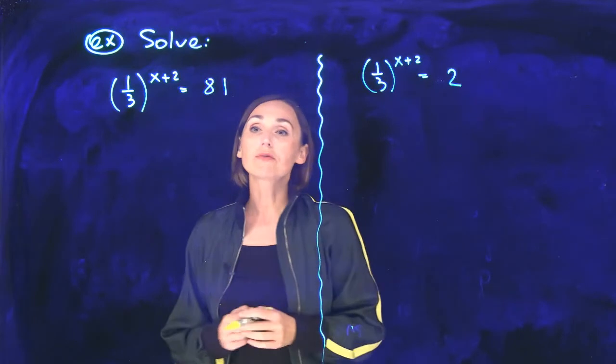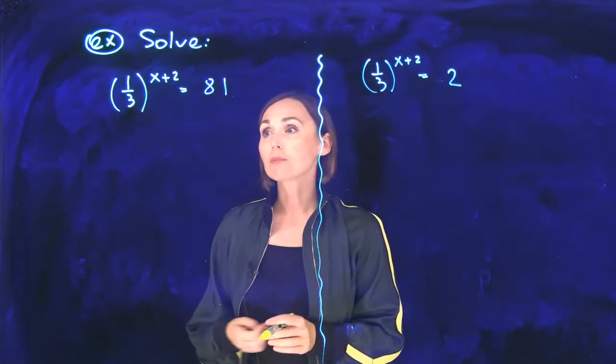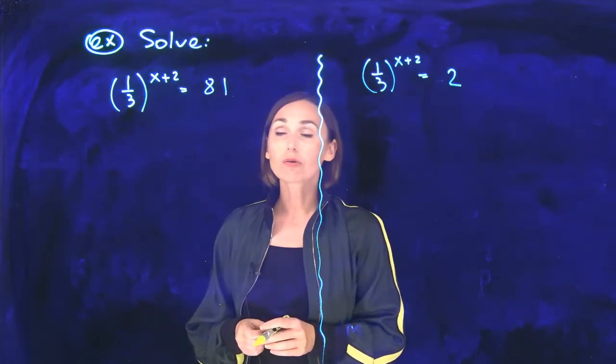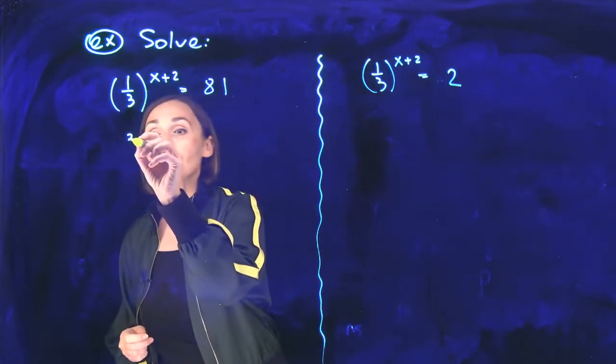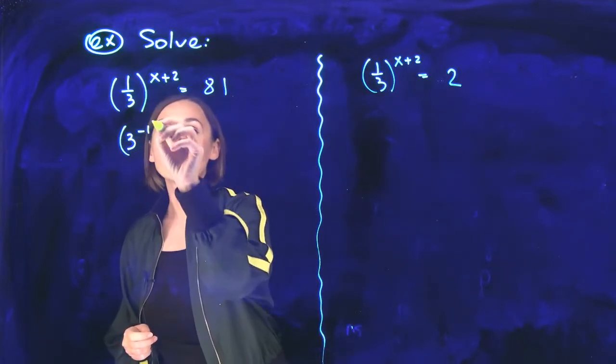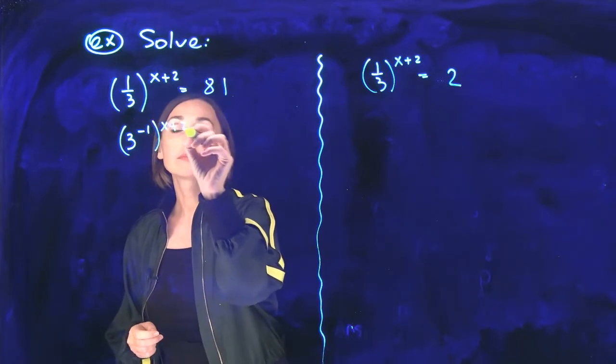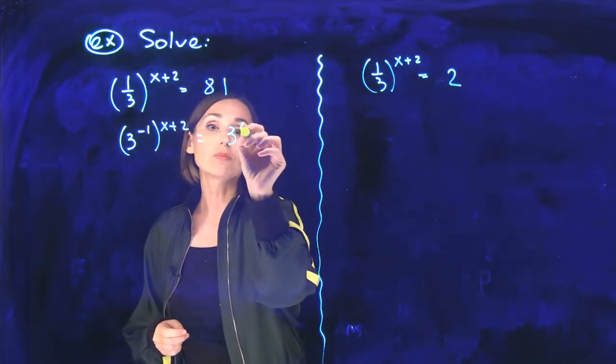On the left side we have a question that is possibly written in the form 3 to the power equals 3 to the power. One-third is 3 to the power negative 1, and 81 is 3 to the power 4.